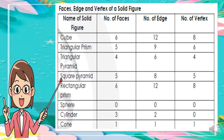A sphere has 0 faces, 0 edges, and 0 vertices. A cylinder has 3 faces, 2 edges, and 0 vertices. And a cone has 1 face, 1 edge, and 1 vertex.